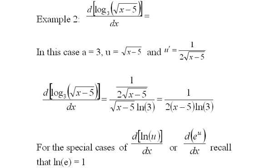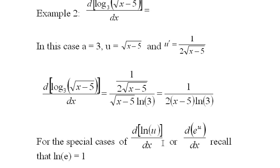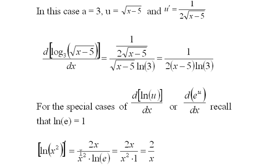For special cases like the derivative of ln(u) and e to the u, remember that ln(e) is always one, so the ln(a) term just turns into one in each case. For instance, the derivative of ln(x squared) is u prime over u times one, which reduces to two over x.